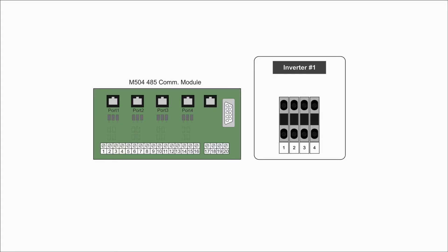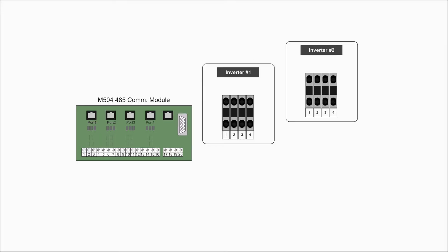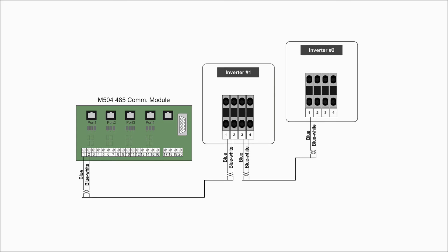To connect the first inverter, wire a twisted pair from the M504 485 COM module terminals D-plus and D-minus to the inverter's A-IN and B-IN terminals. For all successive inverters, wire a twisted pair from the A-OUT and B-OUT terminal blocks of the inverter that is already connected to the A-IN and B-IN terminals of the inverter being added. The M504 gateway will use these connections to communicate with the inverters.